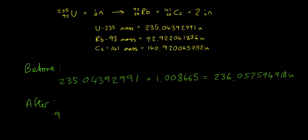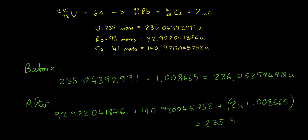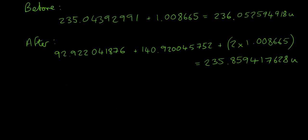Then we calculate the mass after the reaction. So, the mass of the rubidium is 92.922041876, plus the mass of the cesium, which is 140.920045752, plus the mass of two neutrons, that's two times 1.008665. And that will give us a combined mass of 235.859417628U.